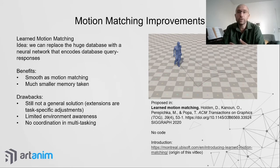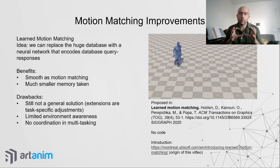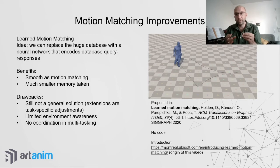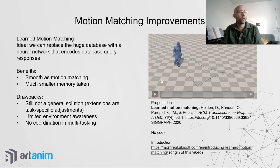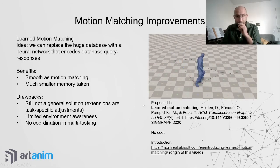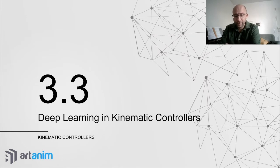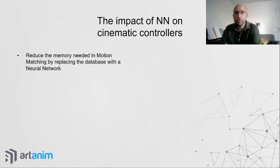Learned motion matching is the first example of using machine learning to improve an animation controller. Instead of storing the huge database, you train a neural network to imitate it: when you give it the same input you would give the database, it outputs the same pose. This works very well, produces smooth movement just like motion matching, but with a much smaller database.